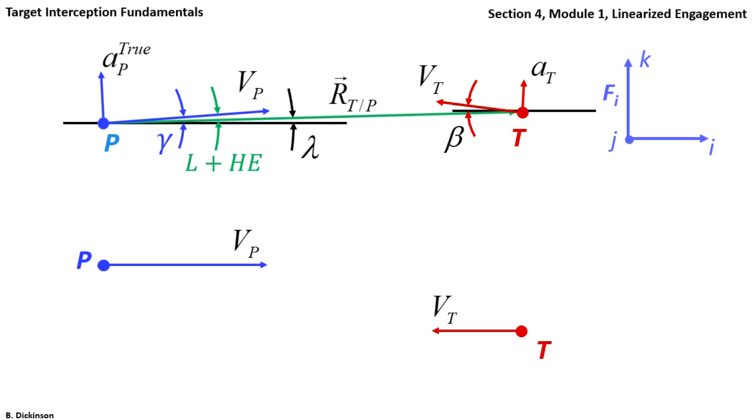When we specify closing velocity as simply VP plus VT, we're assuming that those velocity vectors are parallel. And we also said that range was closing velocity times time to go. So, the pursuer and target, in the horizontal direction, move at constant speeds until they are in the same horizontal position. That's at time to go equals zero. It also means that the initial range in the linearized engagement is dictated by the choice of the final time.